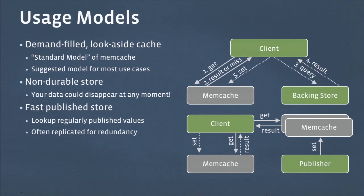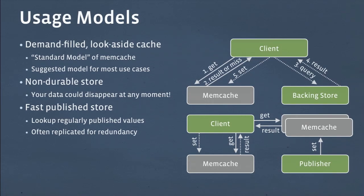Or we'll get a miss back. In the case of a miss, the client has to do something. The client will send a query to a backing store. That backing store might be a database, or an RPC server like a Thrift server — really, it can be any arbitrary client logic. Here at Facebook, we see curls going out, large computations happening, anything you can think of. Once the result is calculated, the client will get the result back and is then responsible for setting that result back to Memcached — not for the sake of the current client, but for any future client that might want to access that data as well.